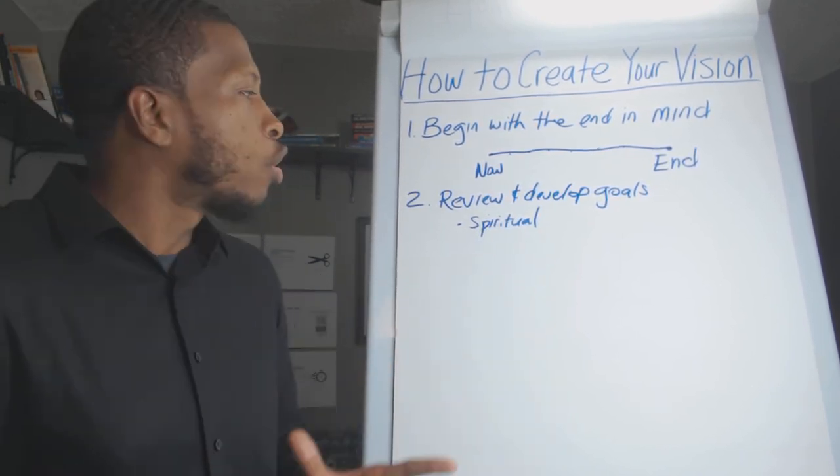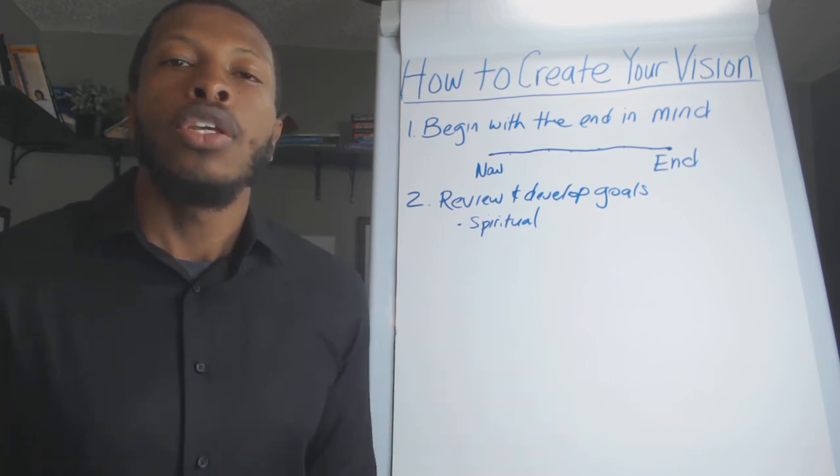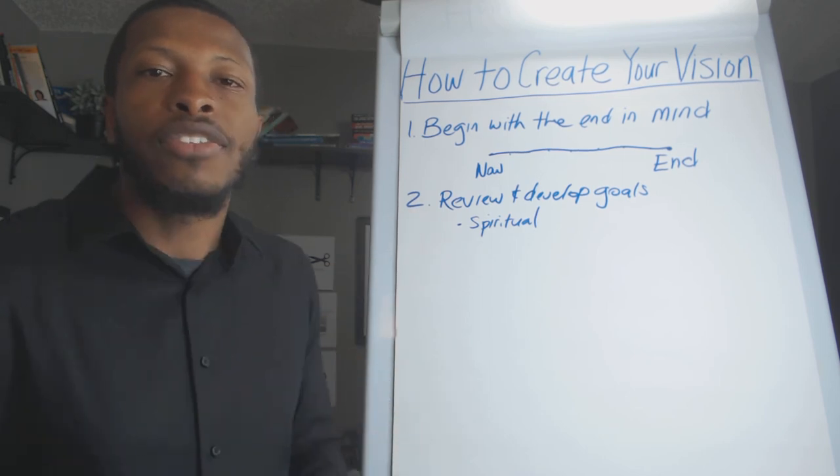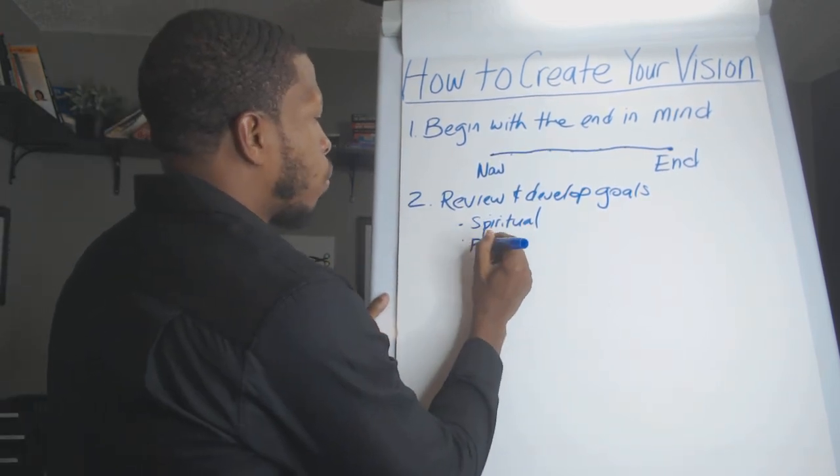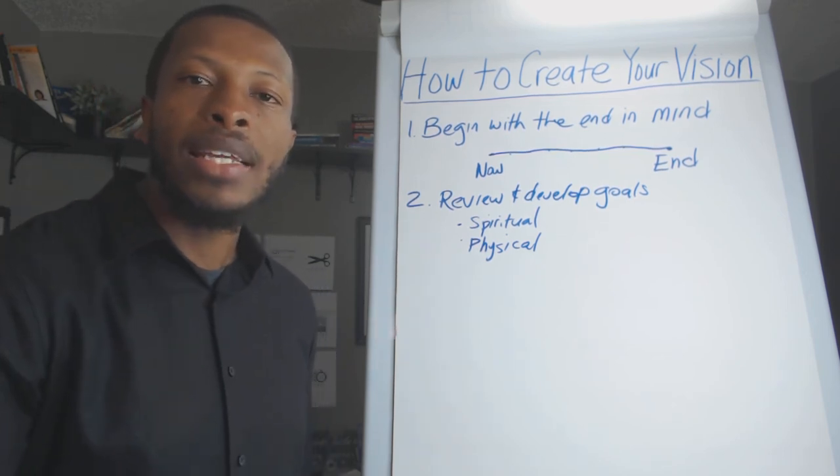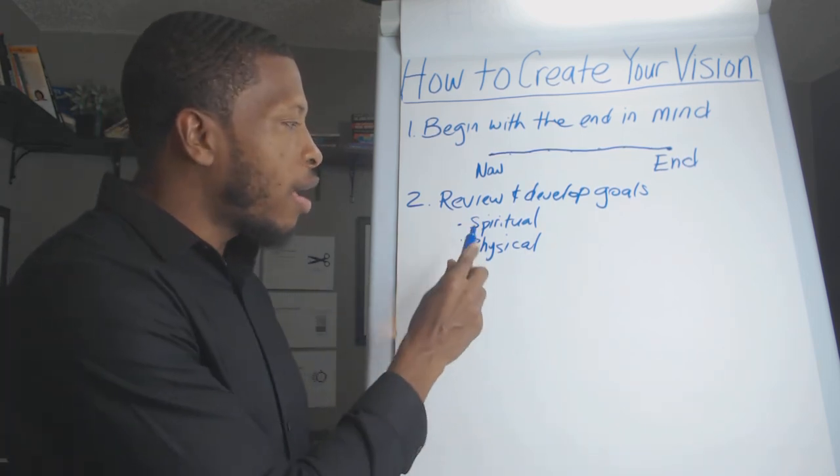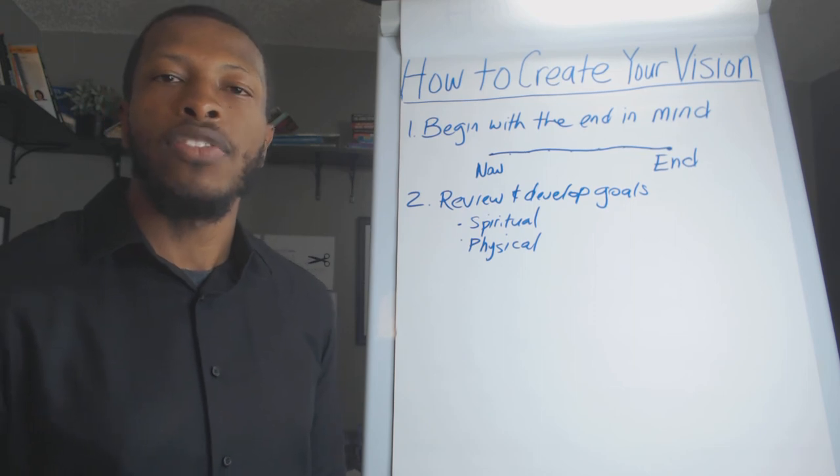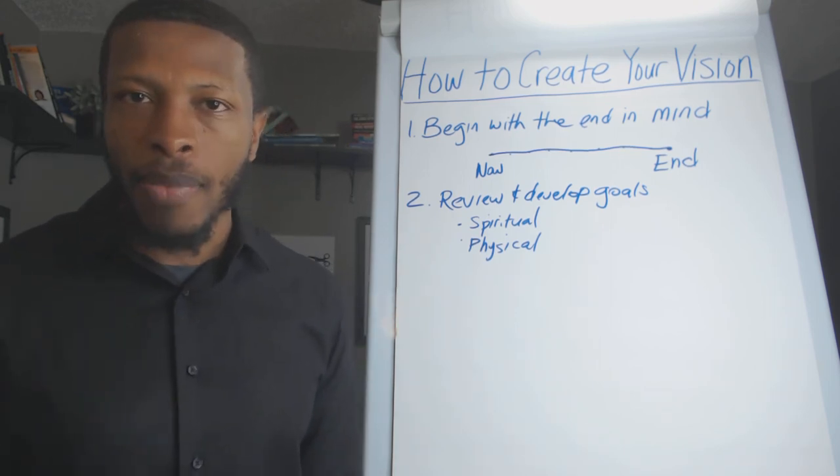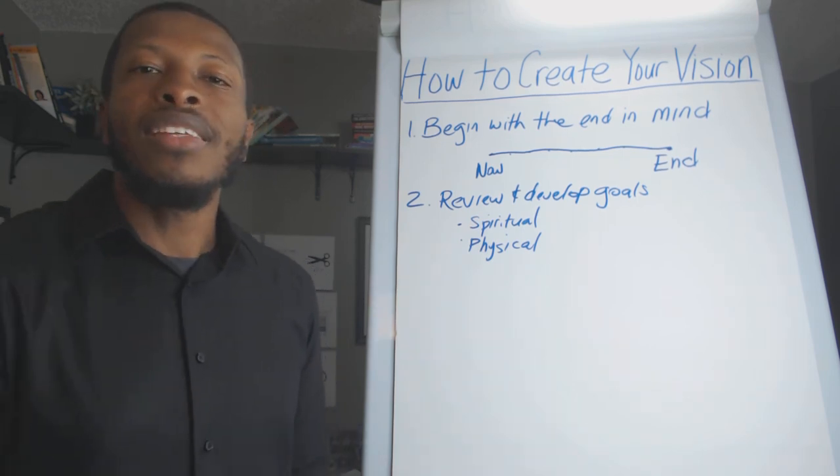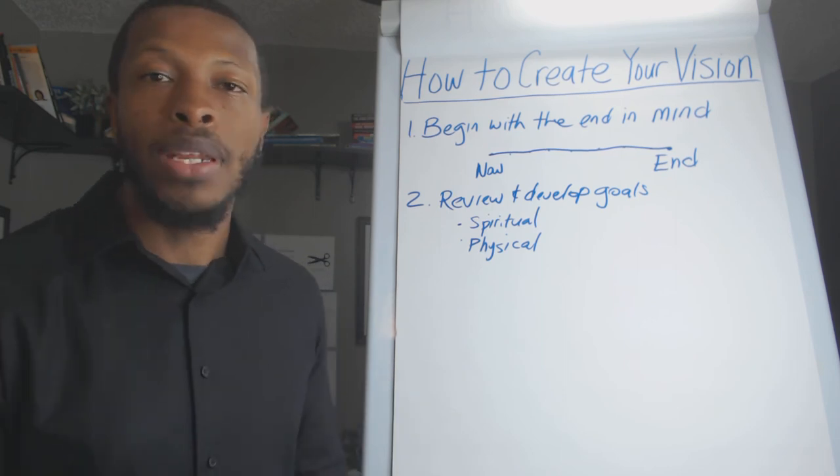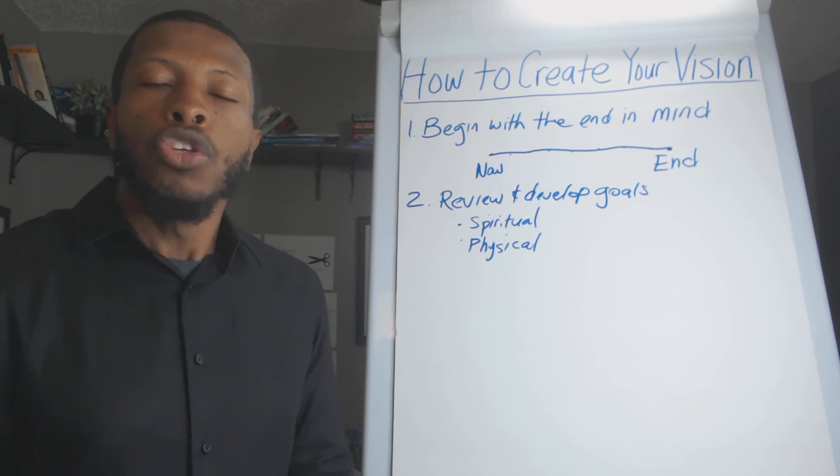A goal without a deadline is a wish. A lot of people wish to accomplish great things, but it never happens because they don't put dates down on paper and hold themselves to it. The first goal you have is spiritual. This could be many different goals, like how much money you want to give to your church foundation. Number two, have physical goals.